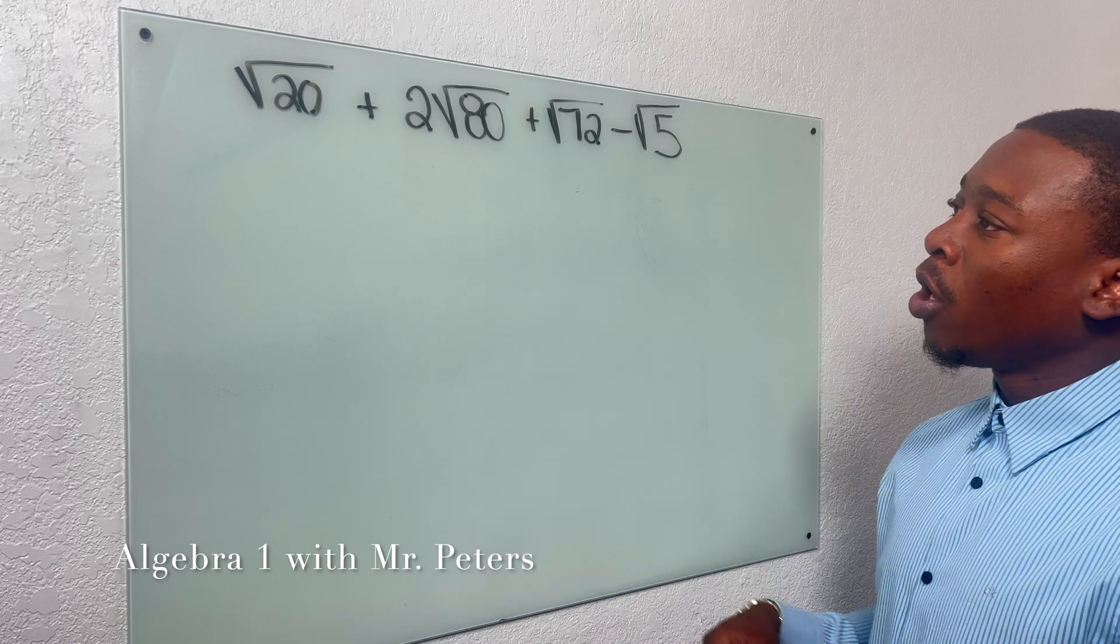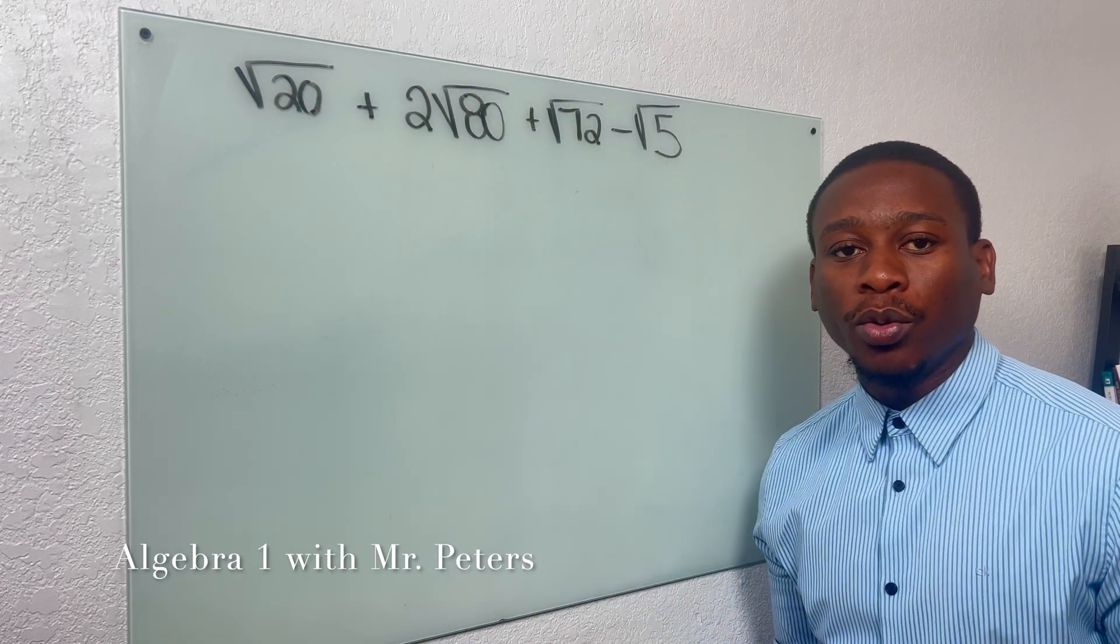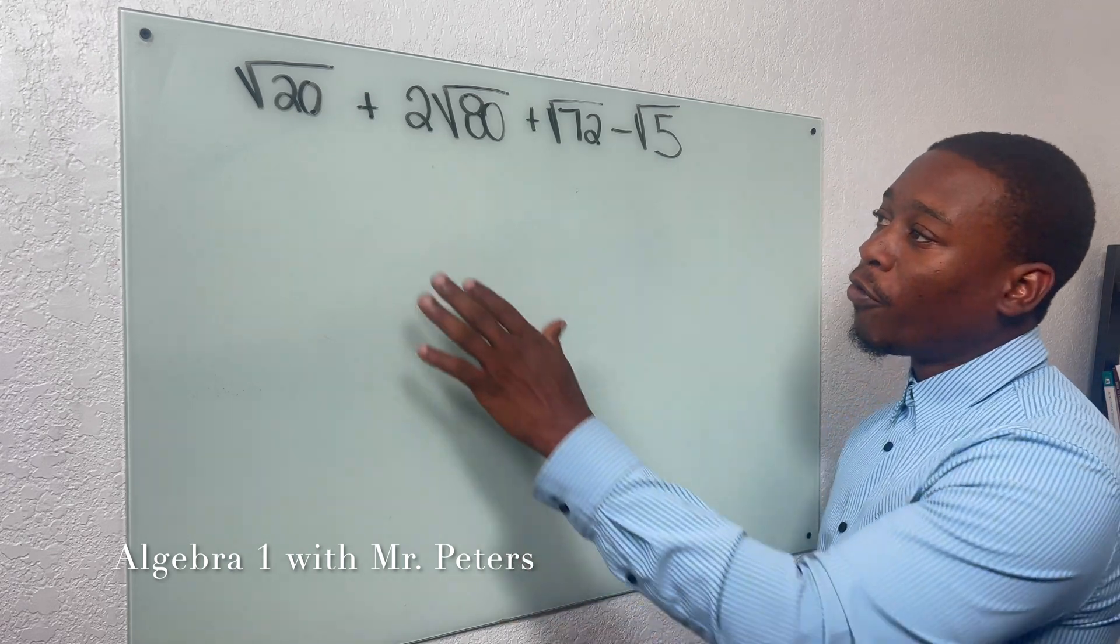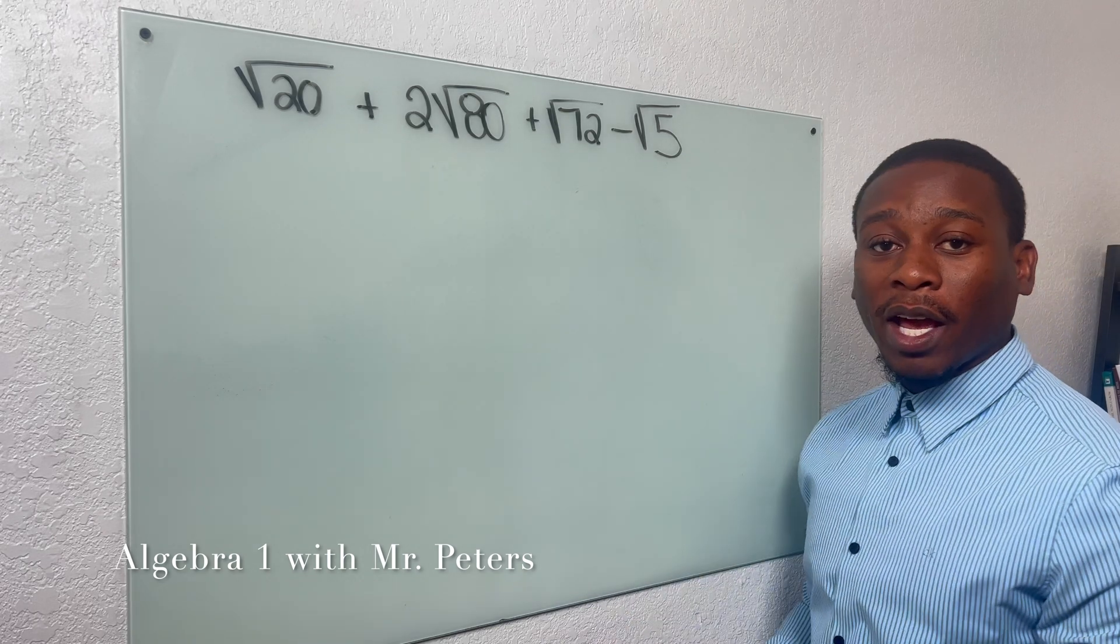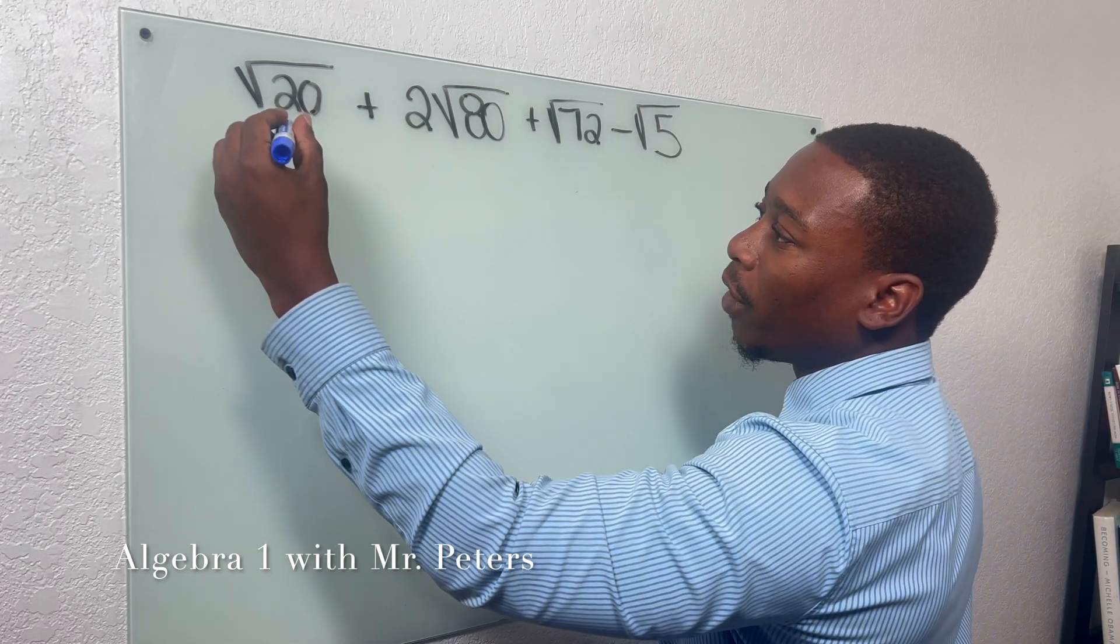So when we look at problem number one, we have to make sure that we have the same root for the radicals, and we do. So we could actually break this down and add them together. But before we do, we have to break the radicals down so that they have the same number under the radical. It's the only way that we can add them together.